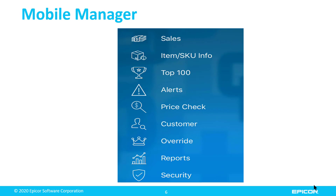The categories in Mobile Manager range from sales down to customer. Then manager overrides, reports, and security are more interactive. We'll talk about what those can do for you as well. But primarily the sales to customer categories are all informational only.